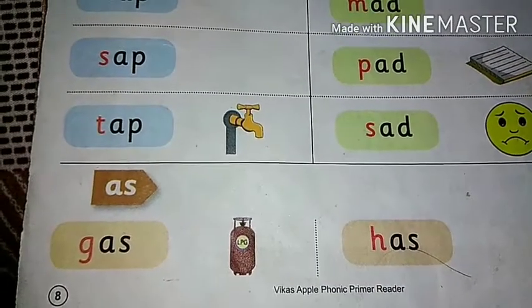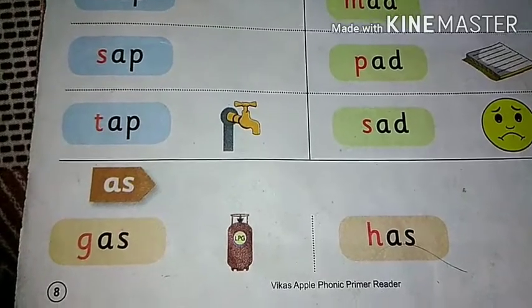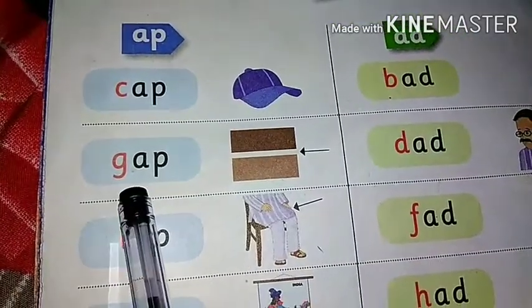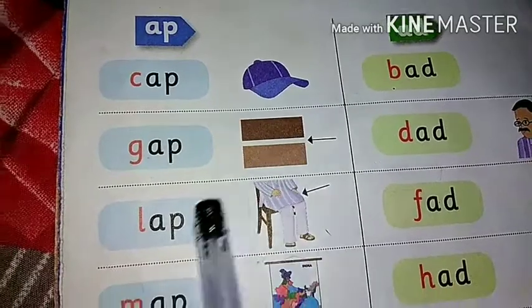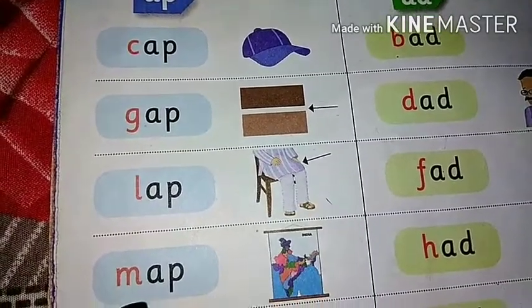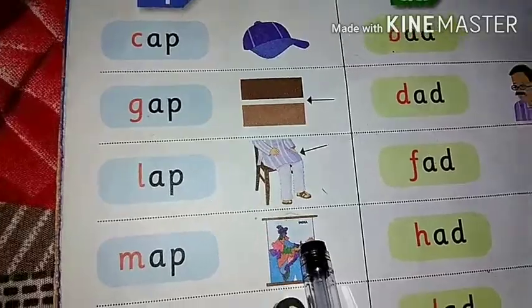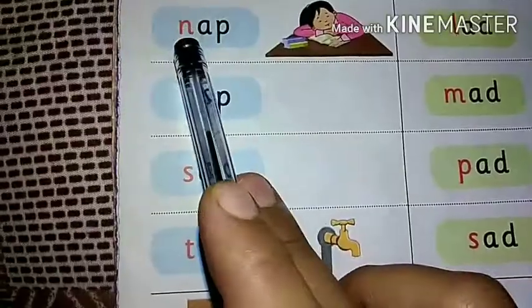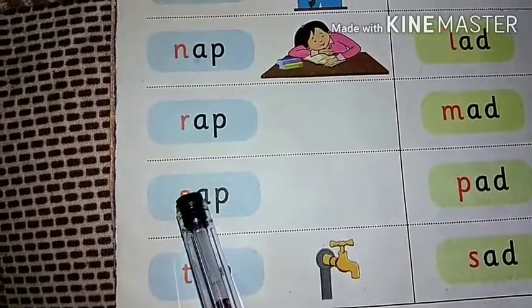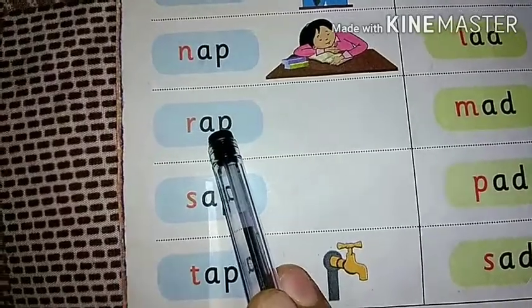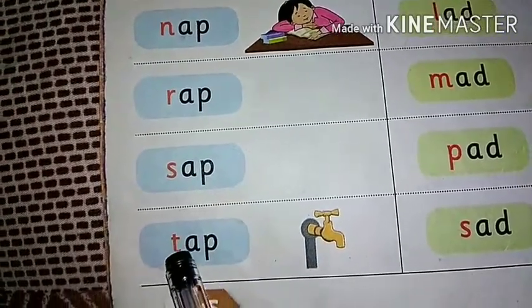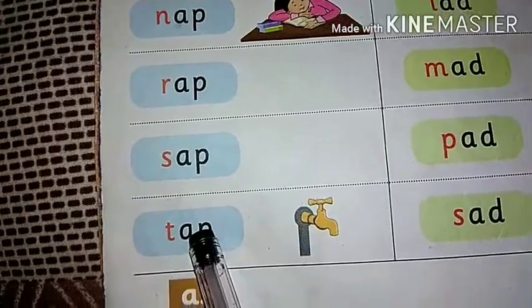Now we will revise all the -ap words again. K-ap — cap. G-ap — gap. L-ap — lap. M-ap — map. N-ap — nap. R-ap — rap. S-ap — sap. T-ap — tap.